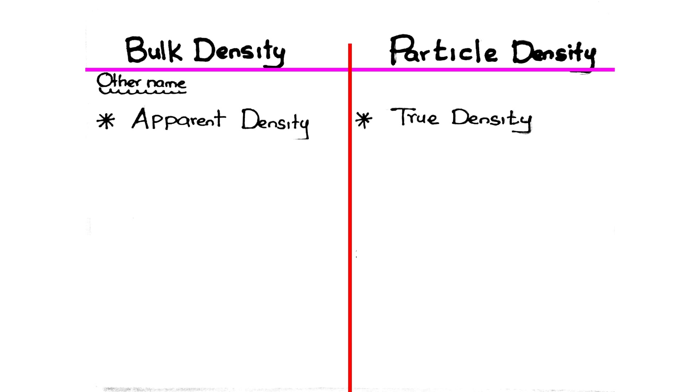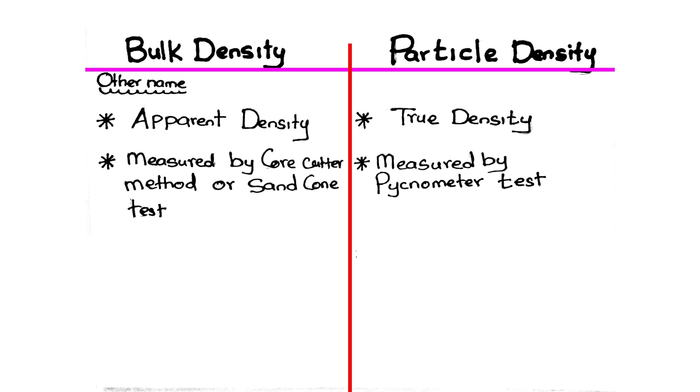Other name of bulk density is apparent density. For particle density, it's true density. Bulk density is measured by core cutter or sand cone test. Particle density is measured by pycnometer test.